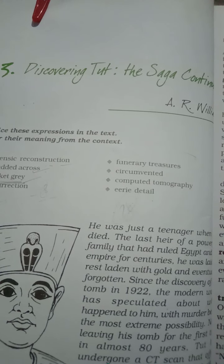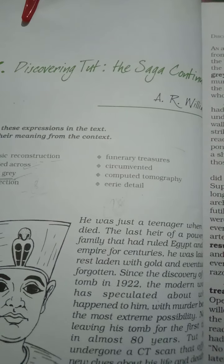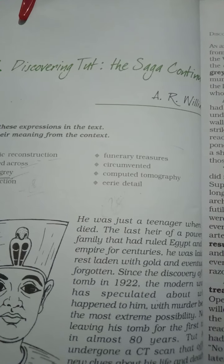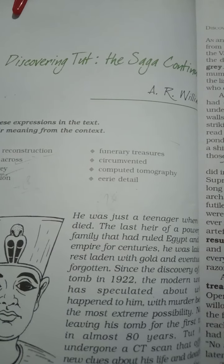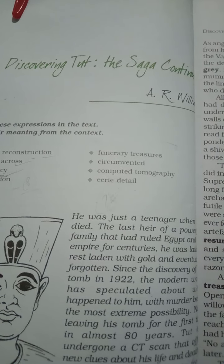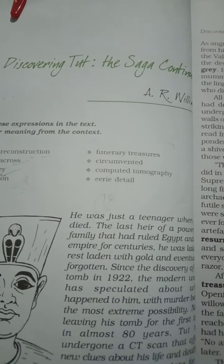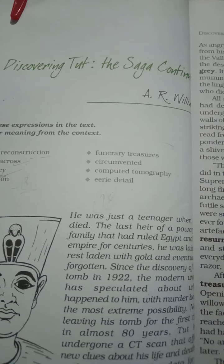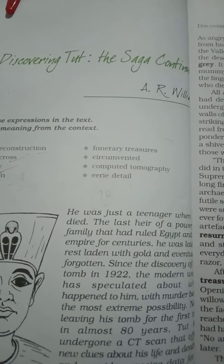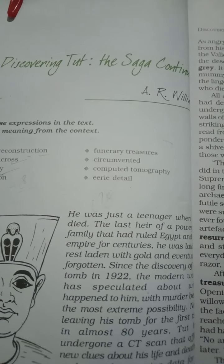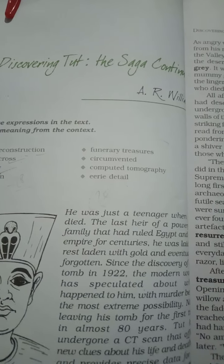When he died, he was buried with a lot of gold and other items — good clothes, dry fruits, and so on — buried along with him. The thinking was that whatever is buried with him in the tomb will be available to him in the next life.